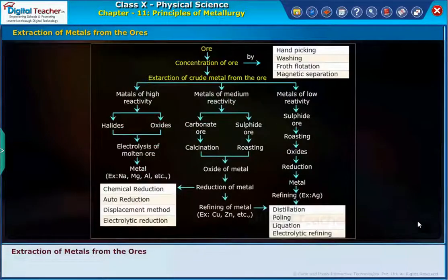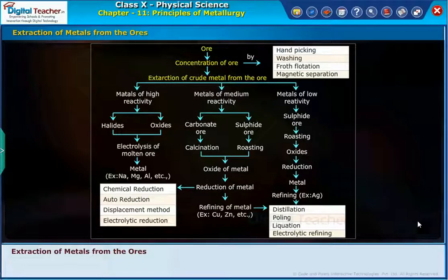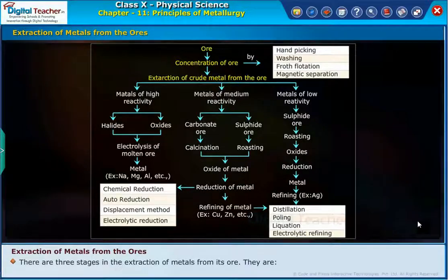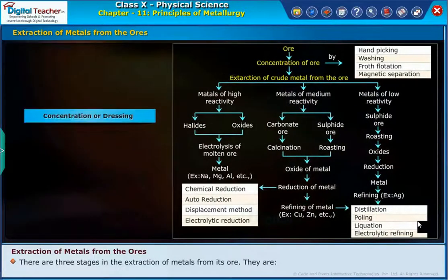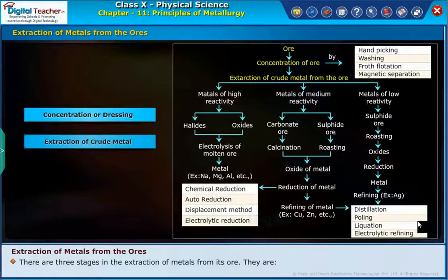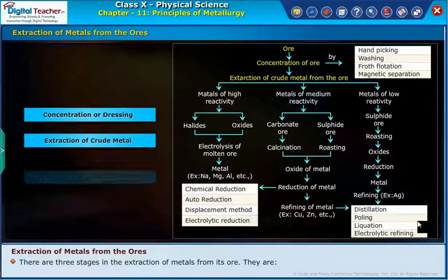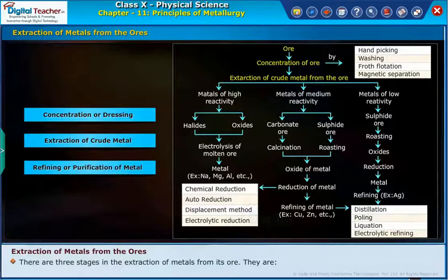Let us find the methods which are used for extraction of metals from the ores. There are three stages in the extraction of metals from its ore. They are: concentration or dressing, extraction of crude metal, and refining or purification of metal.